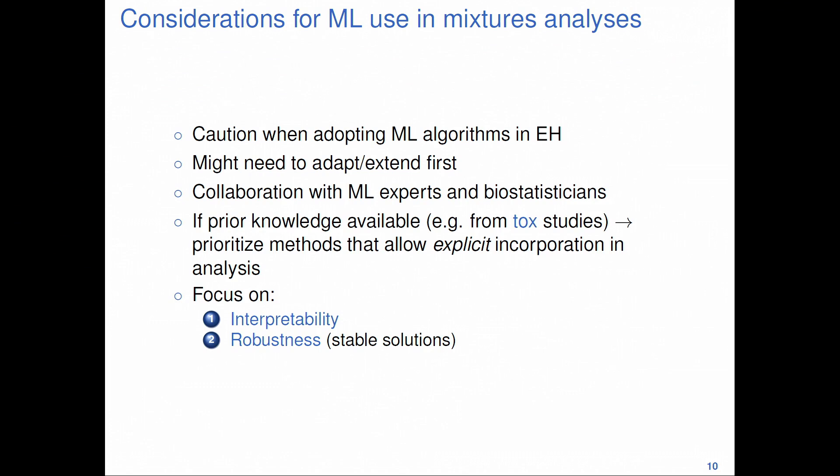This is best done in collaboration with machine learning experts and biostatisticians — going back to the earlier collaboration equation. It's also very important to be able to incorporate prior knowledge in our population health analysis. If there are methods that allow us to incorporate prior knowledge from toxicological studies, this should be prioritized. And we've heard this several times already. The focus should be on interpretable and robust results.